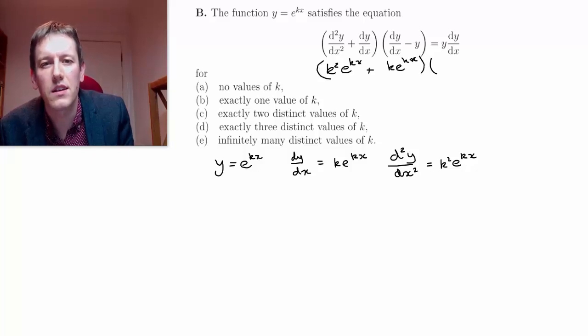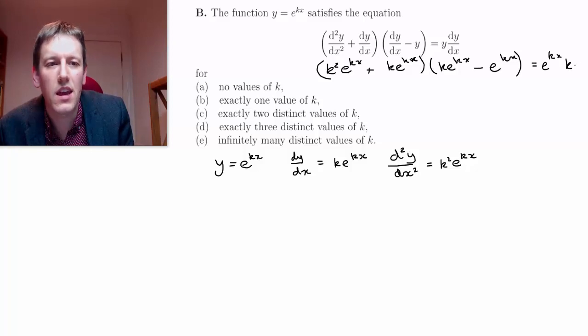And then in the second term here, dy by dx is k e to the kx minus just e to the kx. And I want to say that that's equal to y times dy by dx. That's e to the kx times dy by dx, which is k e to the kx.